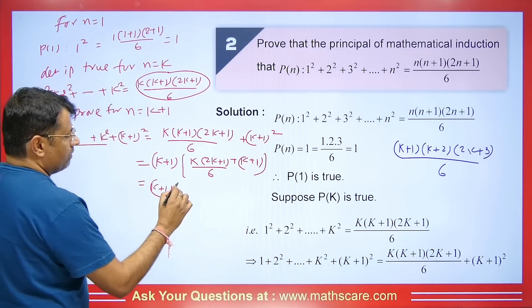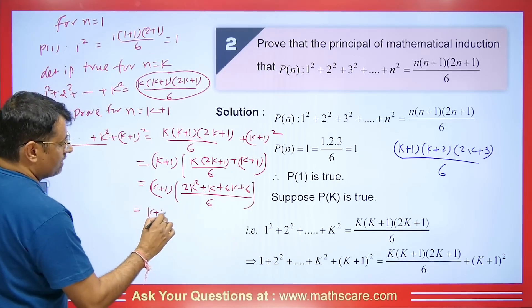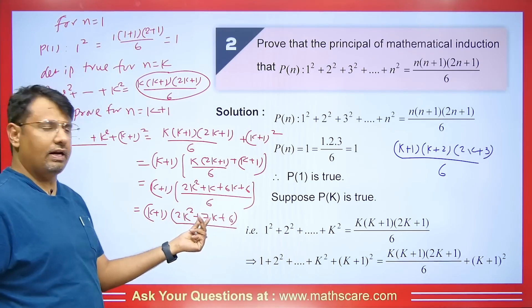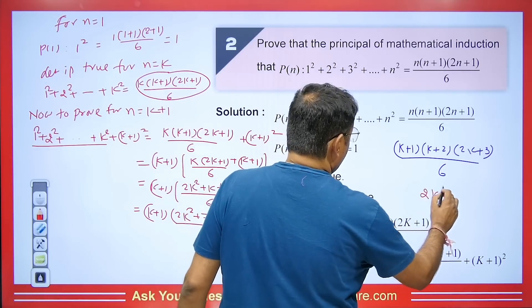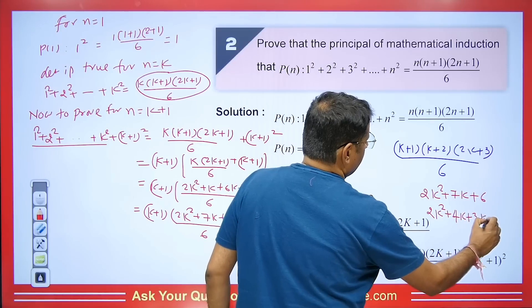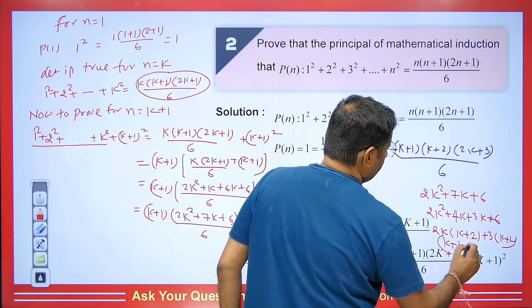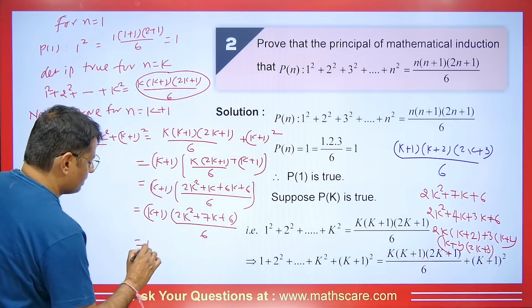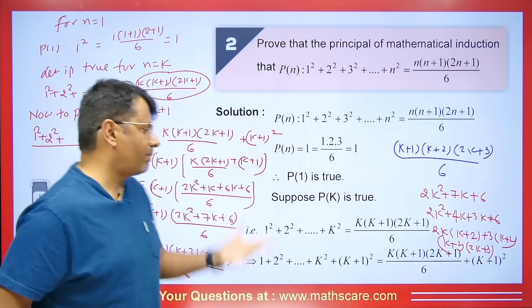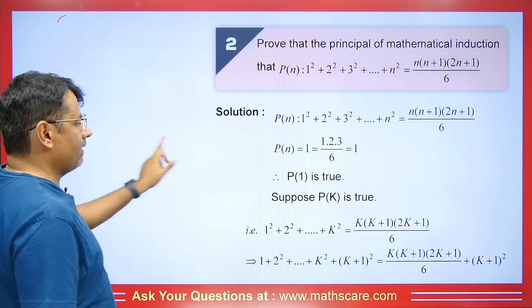We factor 2k²+7k+6: split as 2k²+4k+3k+6, take 2k common to get 2k(k+2), and 3 common to get 3(k+2). So factors are (k+2)(2k+3). Substituting back gives (k+1)(k+2)(2k+3)/6, which exactly matches what we needed to prove. This means the formula is true for k+1 as well. Hence the formula is proved by the principle of mathematical induction.